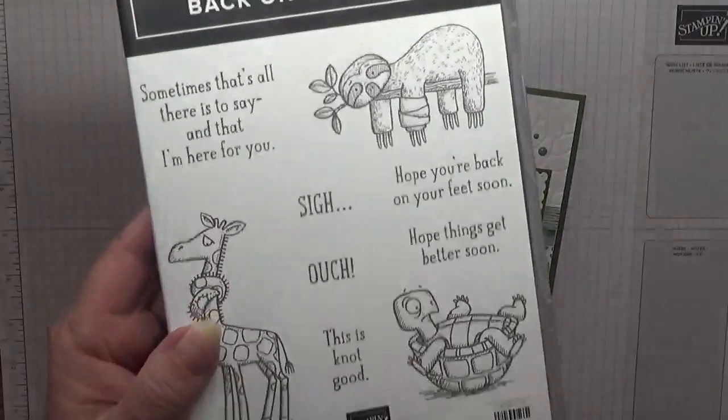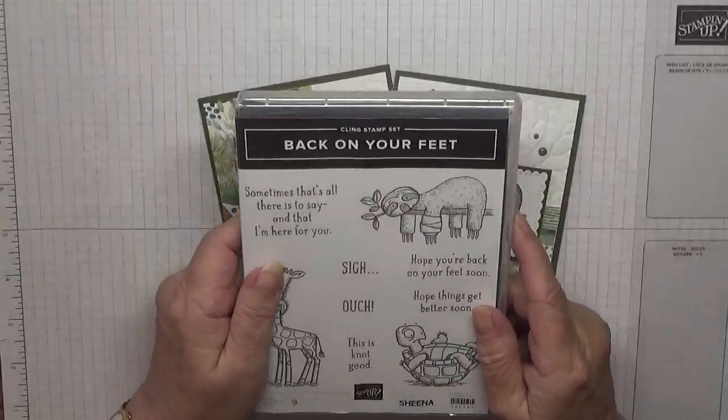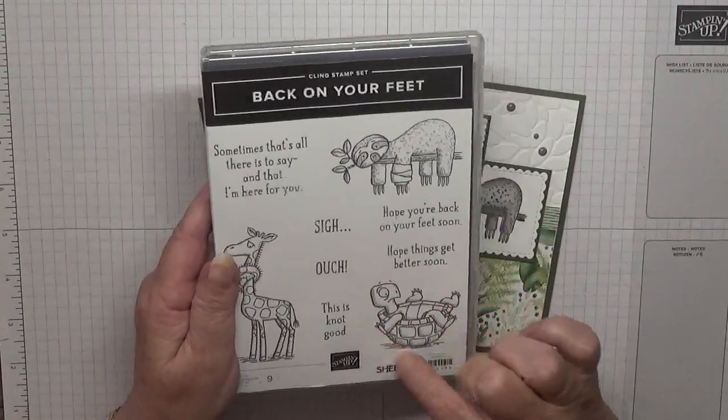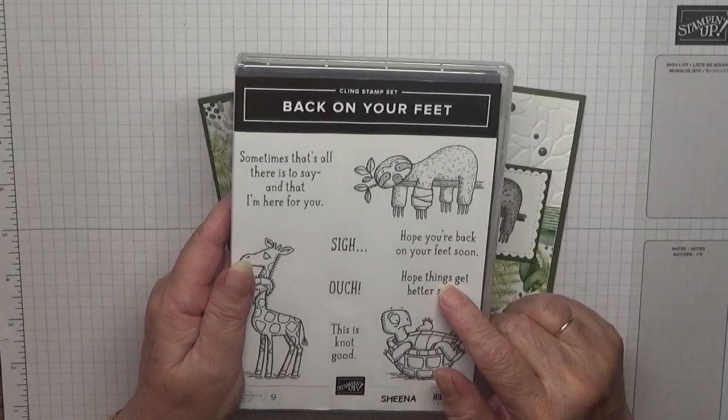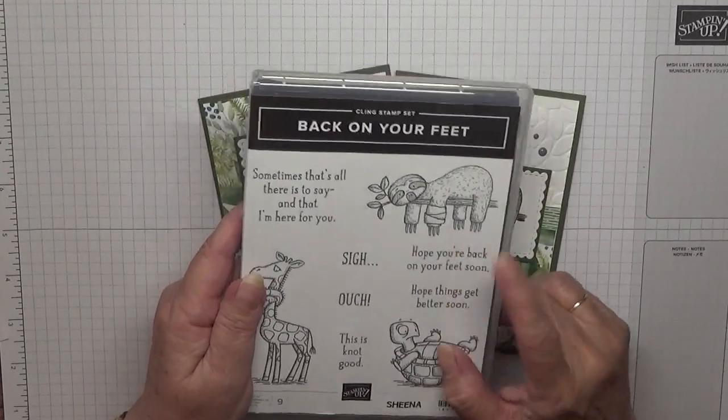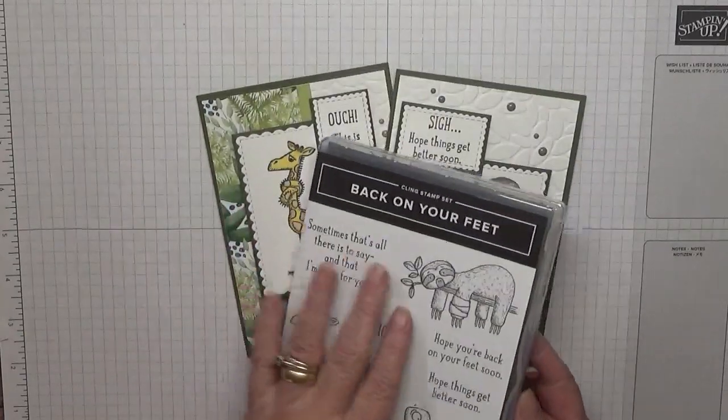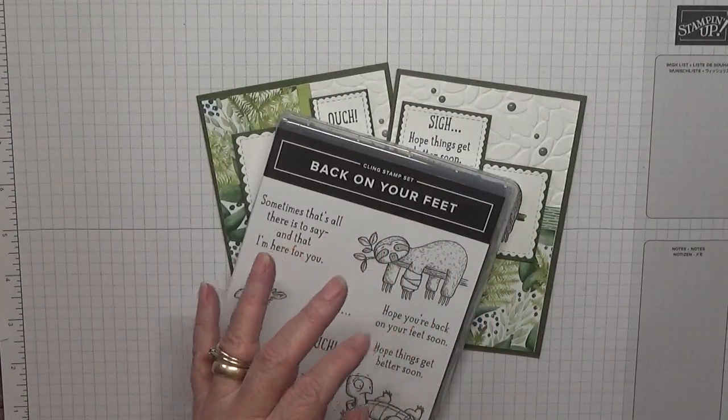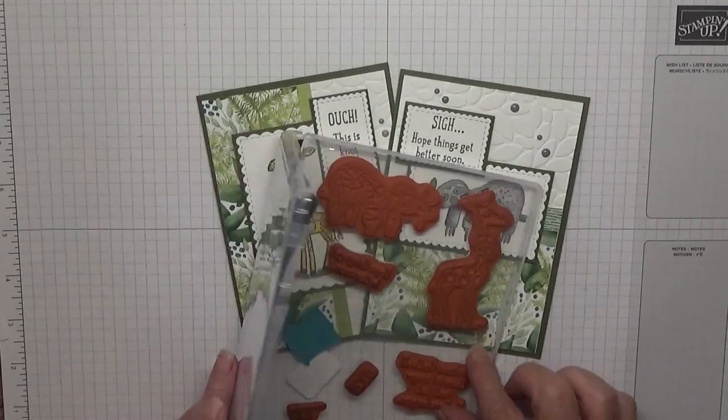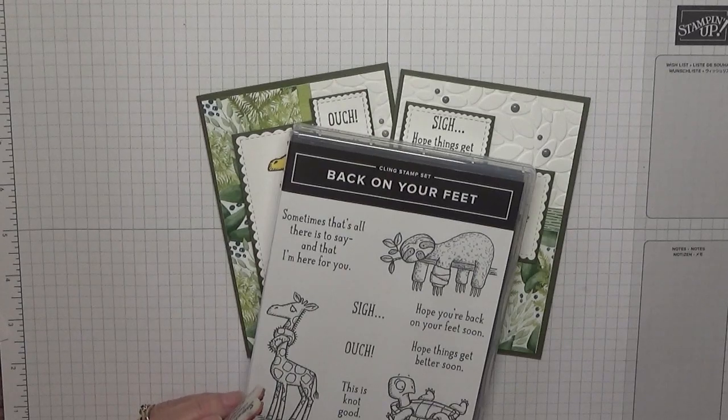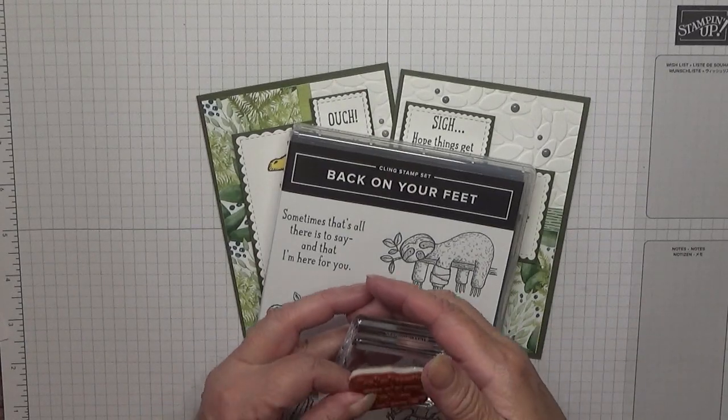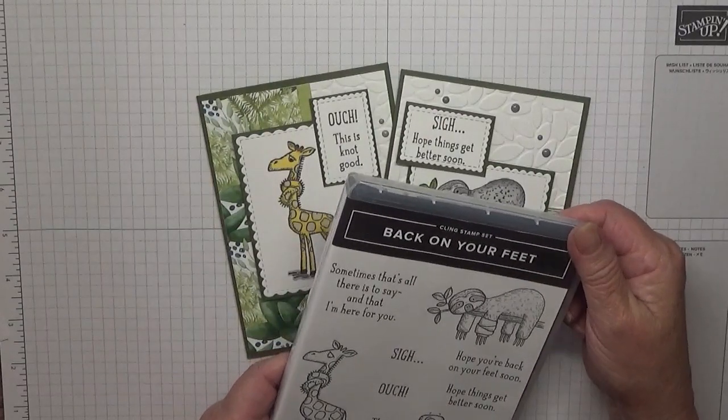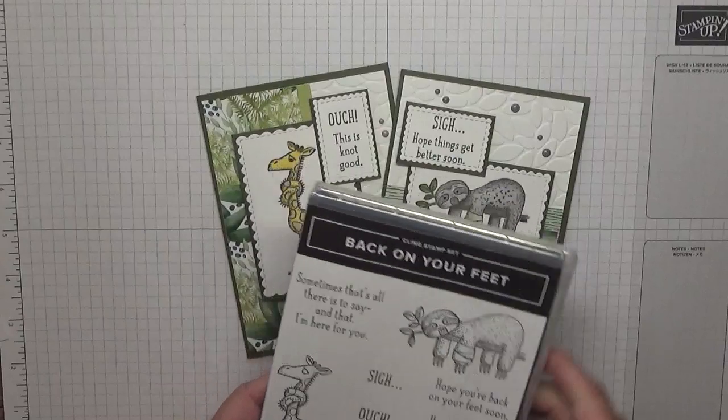This is not my stamp set, it's my sister Sheena's. I borrowed it along with a couple of others. I'm going to make a card using this turtle with the sentiment hope you're back on your feet soon. Inside I'll put sometimes that's all there is to say and that I'm here for you.